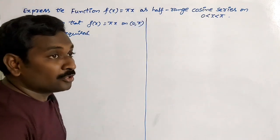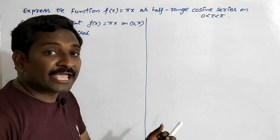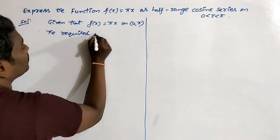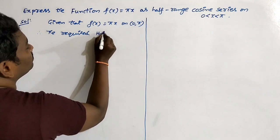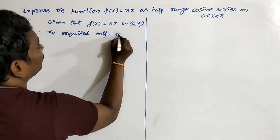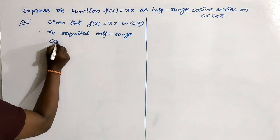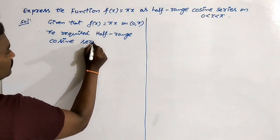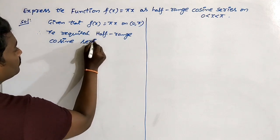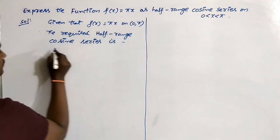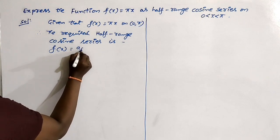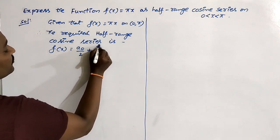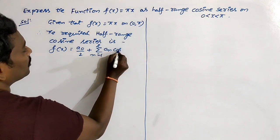First, you have to write the form of the half-range cosine series, meaning you have to find the values of a₀ and aₙ in the expansion. The required half-range cosine series is f(x) = a₀/2 + summation n=1 to infinity of aₙ·cos(nx).